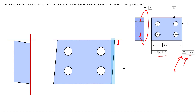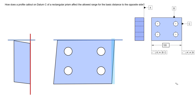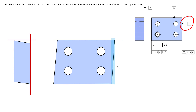For the right surface profile callout, the tolerance zone must be perpendicular to A and perpendicular to B — that's it. We could swap this profile of a surface callout for perpendicularity and the interpretation wouldn't change; we're controlling orientation and form with a four millimeter tolerance zone. Importantly, this tolerance zone can shift left or right — nothing is controlling its location — because we're qualifying datum feature C, which everything else is located to.